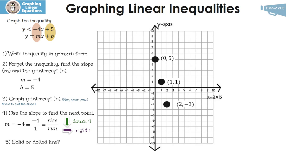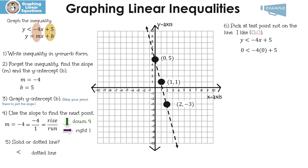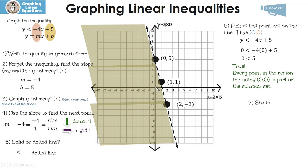Now we have to decide: is it a solid or a dotted line? Since we're using the inequality less than, it's going to be a dotted line, so that's what we draw. Our final step is to decide which region we're going to shade, so we need to pick a test point. I like to use 0, 0 because it's the easiest — make sure it's not on the line. I put 0, 0 in for x and y, and when I simplify I get 0 is less than 5. Since this is true, every point in the region including 0, 0 is part of the solution set, so I shade that side.